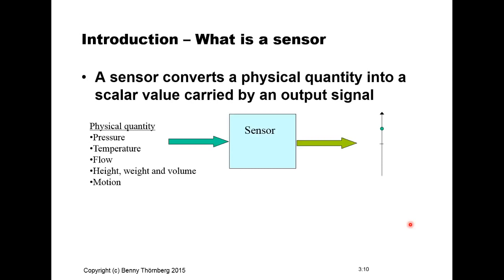A sensor is aimed at converting a physical quantity into a scale of value that is carried by an output signal. Since this course is focused on electrical metrology, the output signal is an electrical signal that carries the information about the measured physical quantity. But of course it could also be an optical sensor where the output signal is an optical signal carried by an optical fiber.